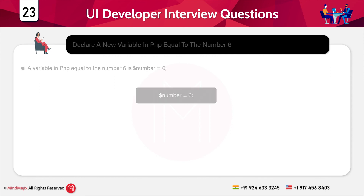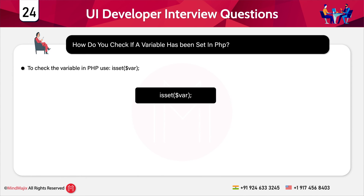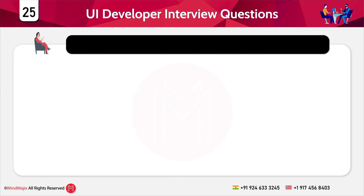The next question is: how do you check if a variable has been set in PHP? To check a variable in PHP you use the isset() method. The syntax is straightforward — you simply write isset() and mention the variable name inside it.